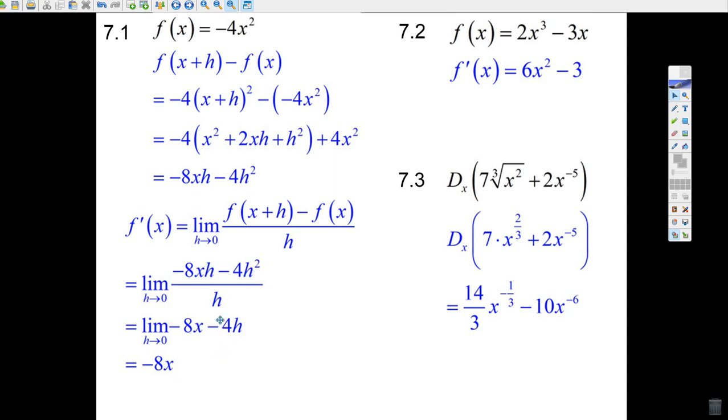Now, look at that. The h's cancel. The h's are going to cancel here. You'll get minus 8x. Here, h squared divided by h, you get minus 4h.